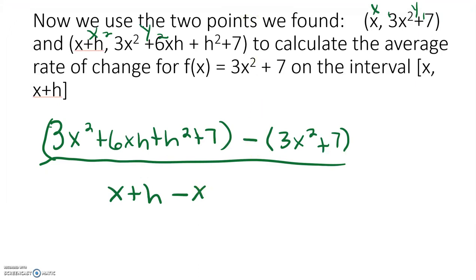Next, we want to combine our like terms. So we have 3x² minus 3x² and 7 minus 7. On the bottom, I see x plus h minus x. And this leaves us with 6xh plus 3h² all over h.